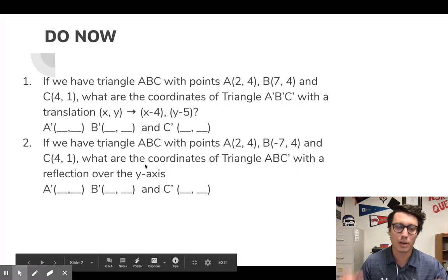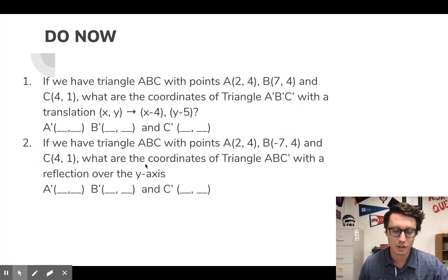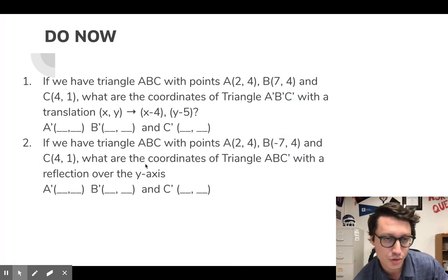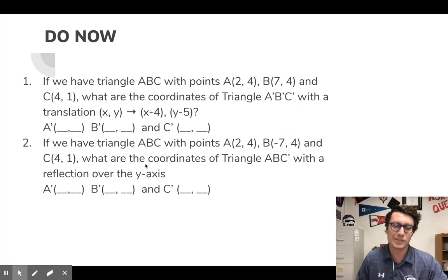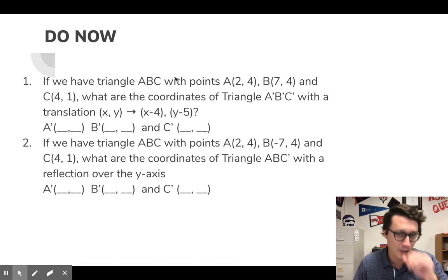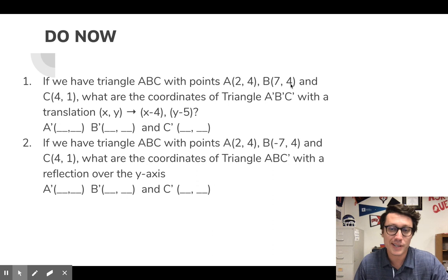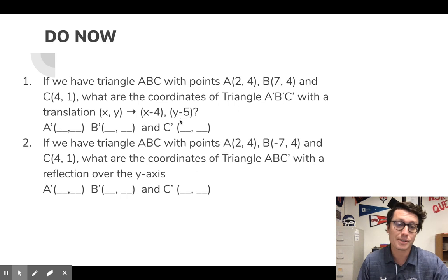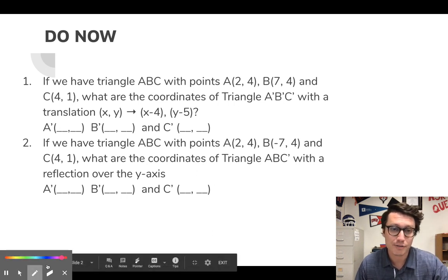Here's a quick little warm-up. If you want to pause the video, try it on your own. This is what we learned last class in 2.2 about translations and reflections. If we have a triangle ABC with points A at (2, 4), B at (7, 4), and C at (4, 1), what are the coordinates of triangle A prime, B prime, C prime with the translation of X minus 4, Y minus 5?